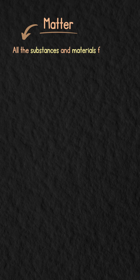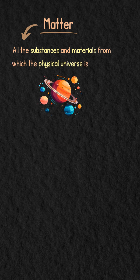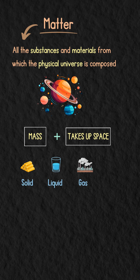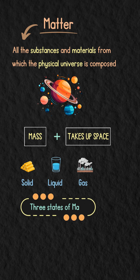Matter. This word is used to cover all the substances and materials from which the physical universe is composed. In more scientific terms, matter is anything that has mass and takes up space. There are many millions of different substances known, and all of them can be categorized as solids, liquids, or gases. These are what we call the three states of matter.